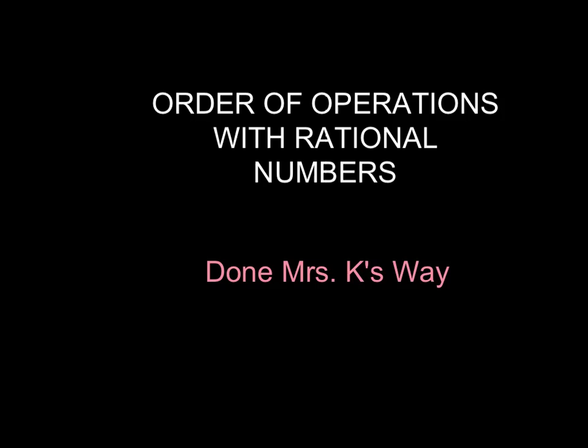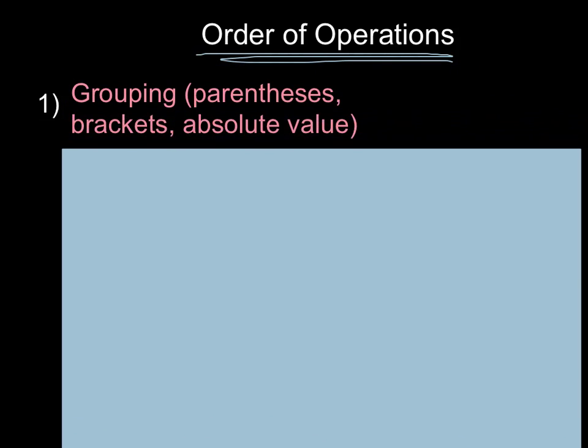We're going to be looking at how to combine rational numbers while using order of operations. Just as a little refresher, our order of operations has different steps. The first is to combine all grouping symbols, which means anything within a parentheses, bracket, or absolute value.